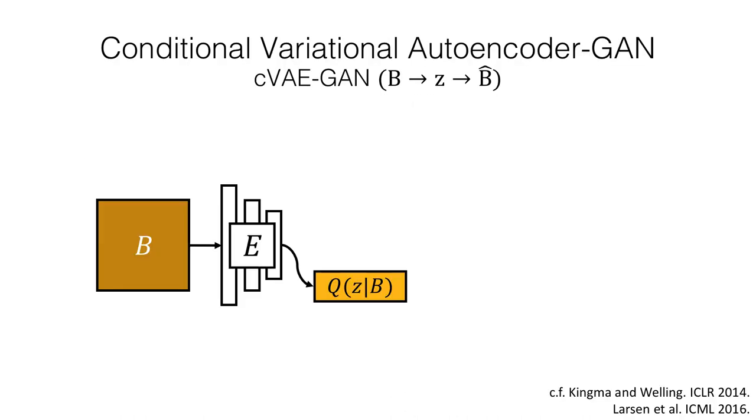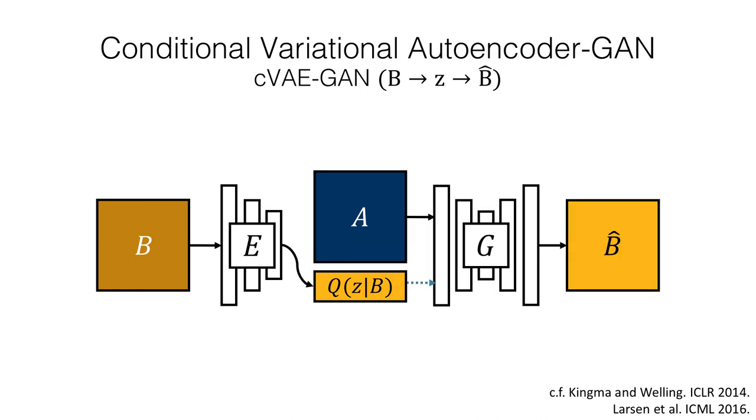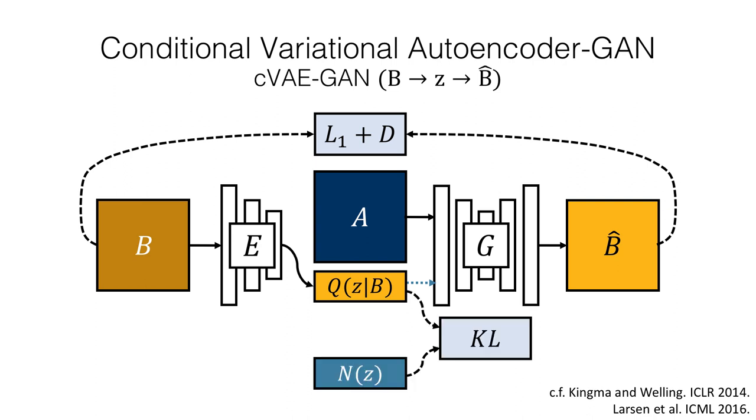Conditional variational autoencoders encode the ground truth output into a latent space, which is then used by the generator to help reconstruct the ground truth image. A KL loss is added to encourage regularity in the latent space.